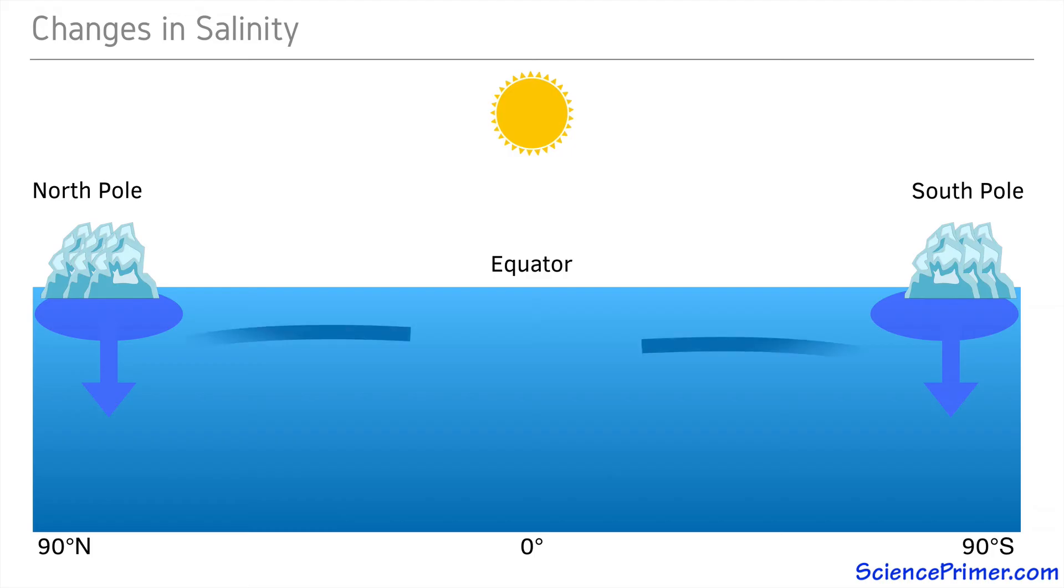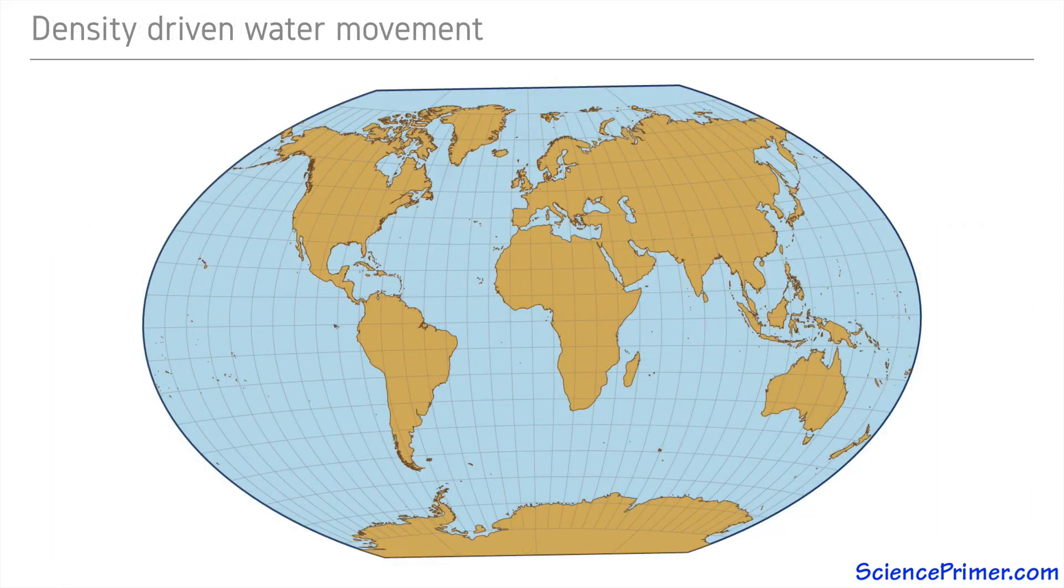This triggers a slow but important large-scale circulation cycle. This sinking of dense water triggered by ice formation only occurs in a few places on earth, two in the North Atlantic and in one location near Antarctica in the Southern Ocean.